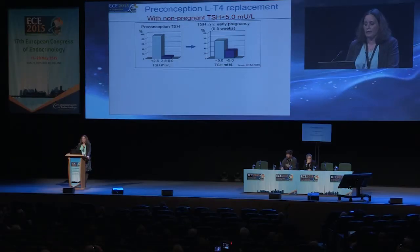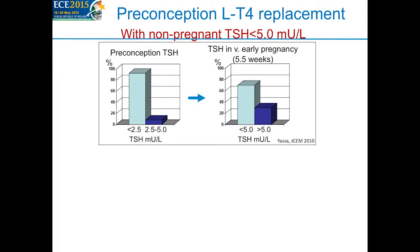Looking at preconception levothyroxine replacement: in a study of 48 women with pre-pregnant serum TSH below 5 — with quite a few having TSH below 2.5 (90% of them) — when they looked at what happened to serum TSH at a median of 5.5 weeks of pregnancy, a significant proportion — 30% — had a serum TSH greater than 5, above the upper limit of even a non-pregnancy-specific reference range.